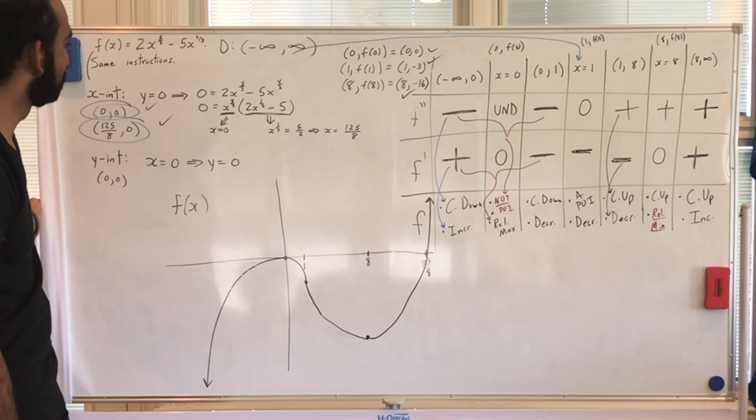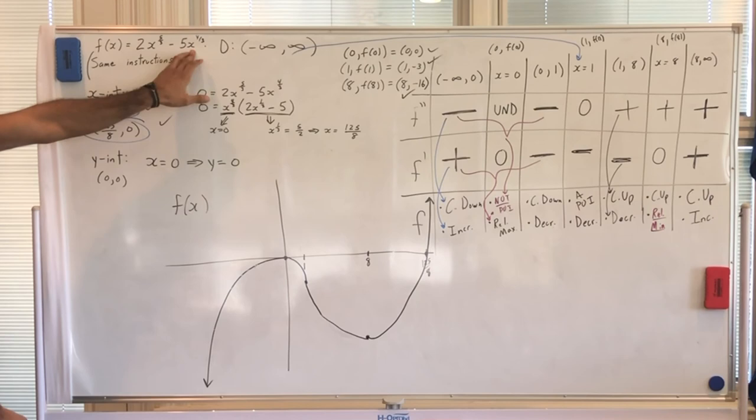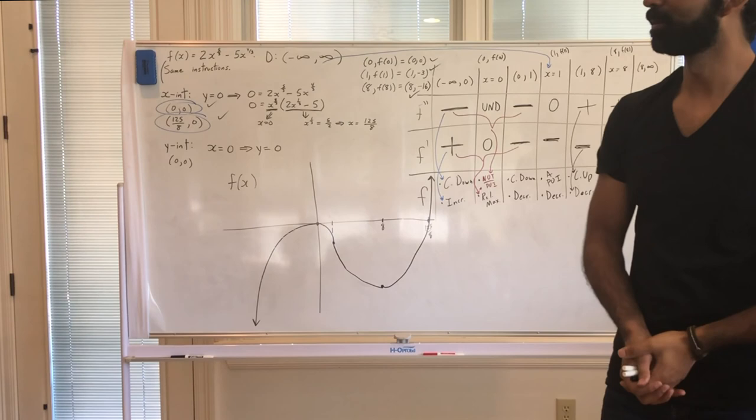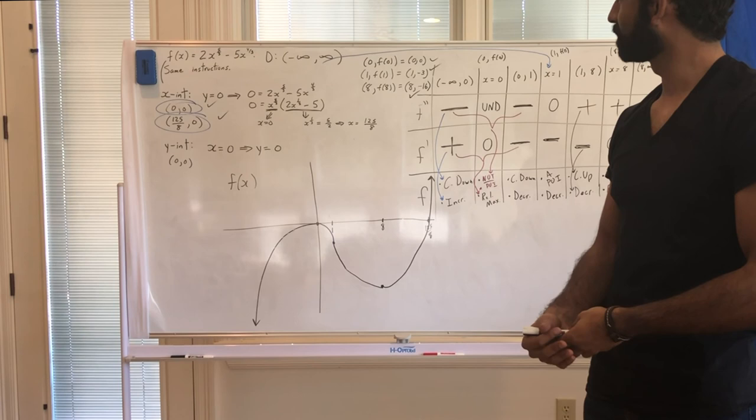That is how you graph complex functions — things you would not know off the top of your head — using a wealth of knowledge from calculus and pre-calculus in perfect unison. This is essentially the end of Calculus 1 curve sketching.